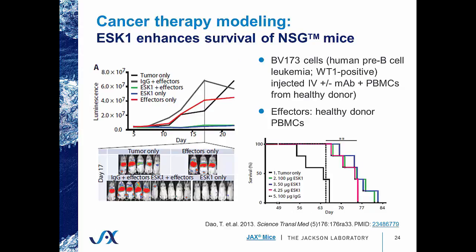They also wanted to test the effects on tumor growth. They took BV173 cells, which are human pre-B cell leukemia that are also WT1-positive, and injected them intravenously into NSG mice plus or minus their antibody, in addition to peripheral blood mononuclear cells from healthy donors. They measured luminescence as a readout for tumor growth, and in the presence of their therapeutic antibody and PBMCs as effectors, they saw a reduction in tumor growth. This also correlated with improved survival only in the presence of their therapeutic antibody, demonstrating that NSG mice not only engraft cancer cell populations but also support human immune cell populations that retain their function and ability to fight tumors.